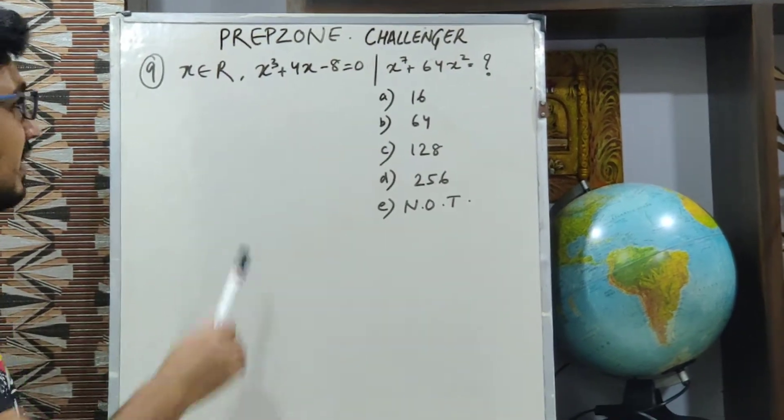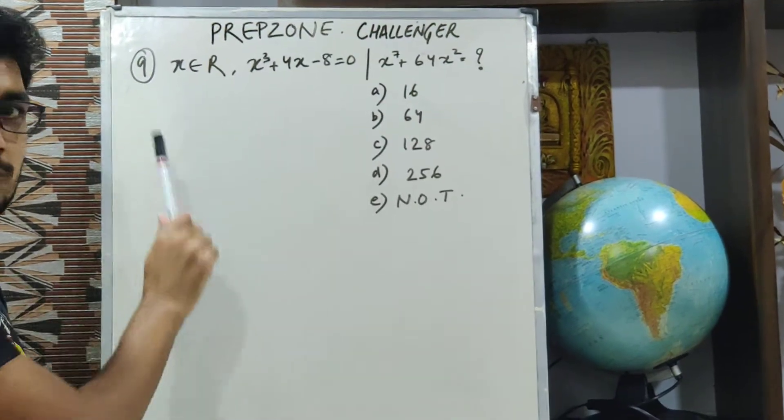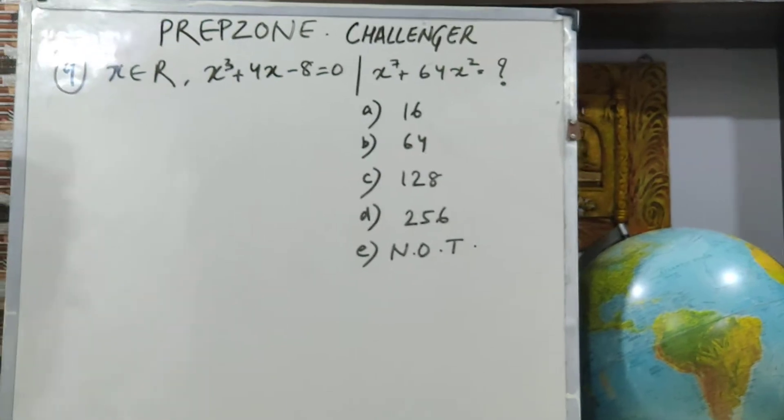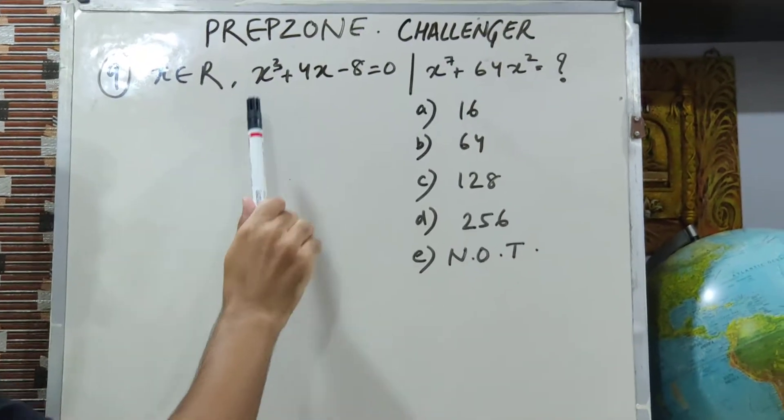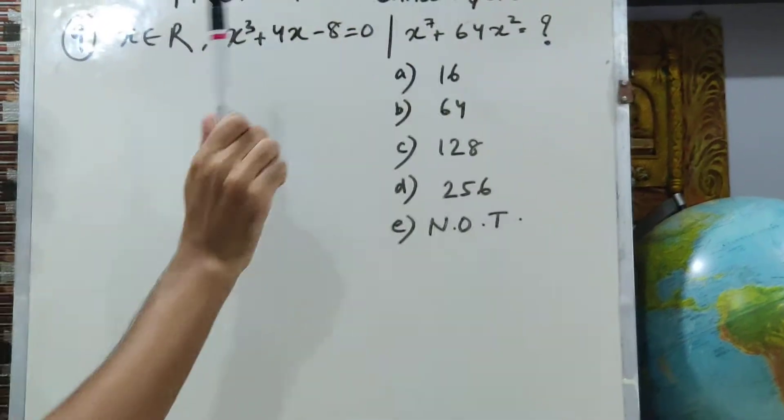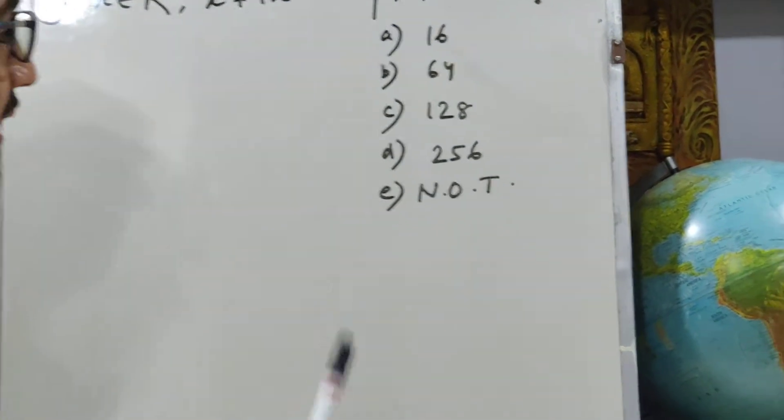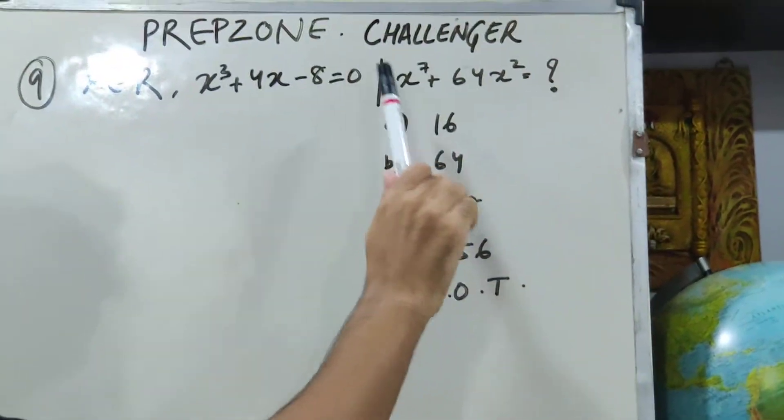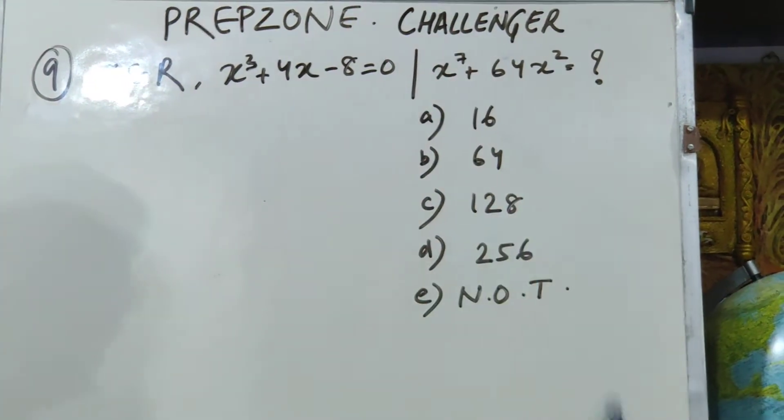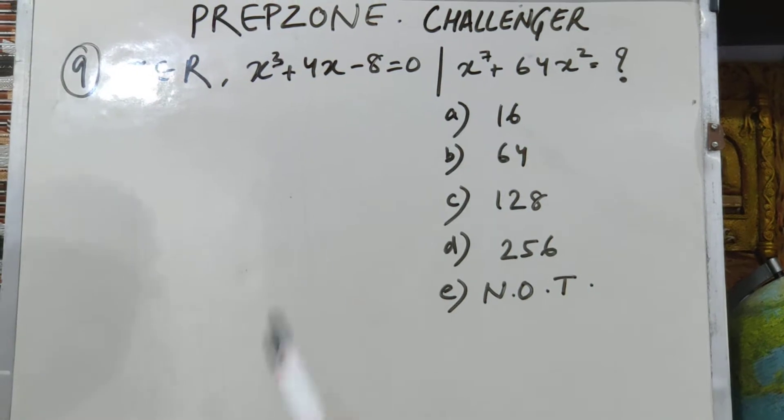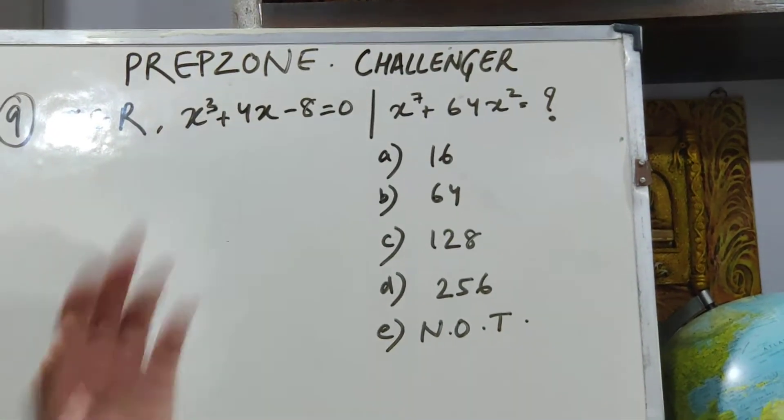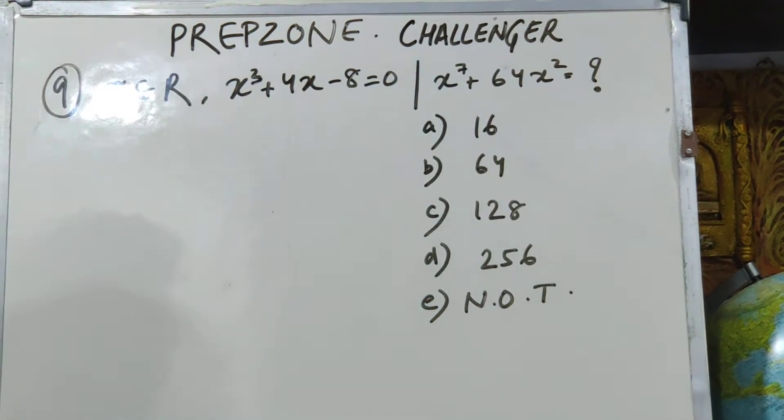The question says: x is a real number, which means x belongs to the set of real numbers. And the equation which is given to you is x³ + 4x - 8 = 0. Now what is the question? What is the value of x⁷ + 64x²? There are 5 options given. This means that you are given x³ and you are asked to get the value of x⁷ + 64x².